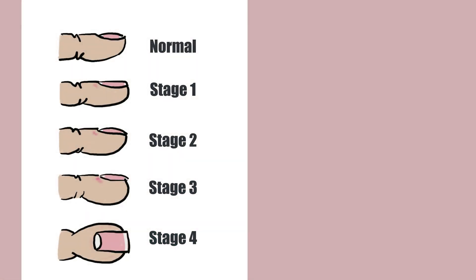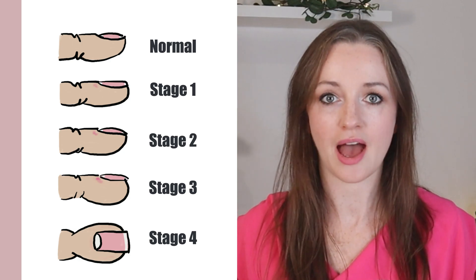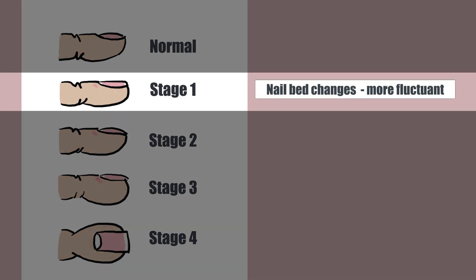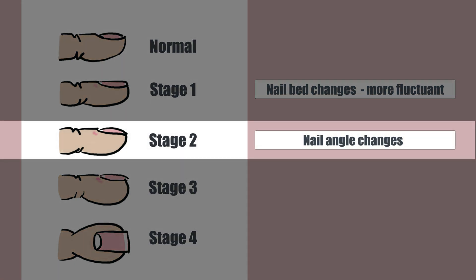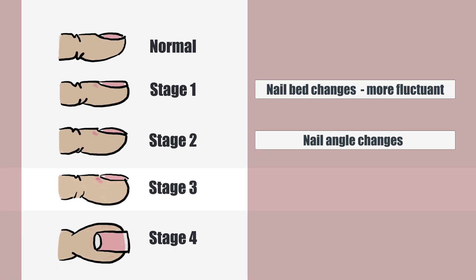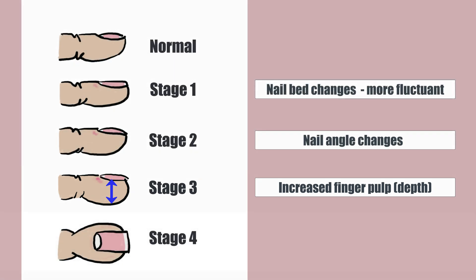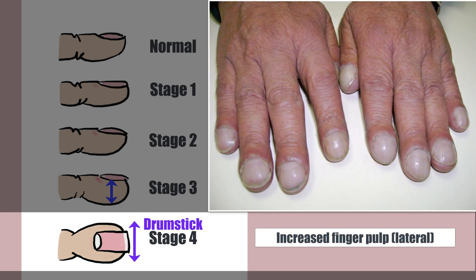Clubbing has a spectrum of presentations from early to advanced. In terms of the stages of clubbing, these are important because they shape how we look at this at the bedside. Stage one is when the nail bed changes - it feels a bit more spongy, the nail rocks more easily, and it might become red around that area. Stage two is when the angle of the nail changes, taking more of a downward slope. Stage three is when the finger expands up and down, so the fingertip actually gets a bit chunkier. Stage four is when the finger expands laterally, giving that drumstick appearance.